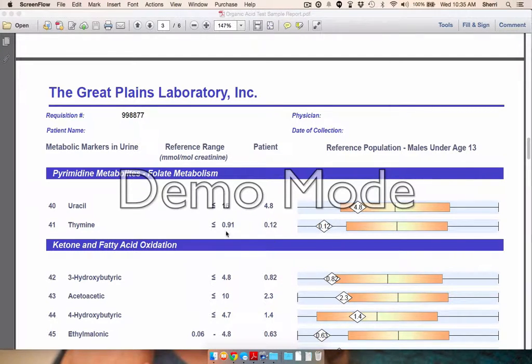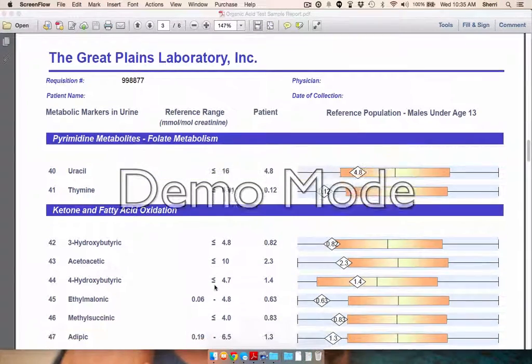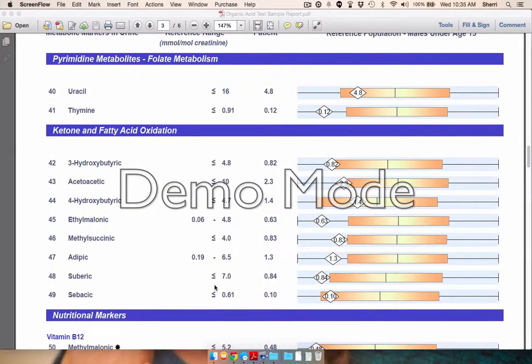Here we're looking at fatty acid oxidation. How well do you do with carbohydrates and breaking them down, your fatty acids? So again, we're looking at energy production. If you have trouble losing weight, this is a great area to look at, look a little bit deeper.